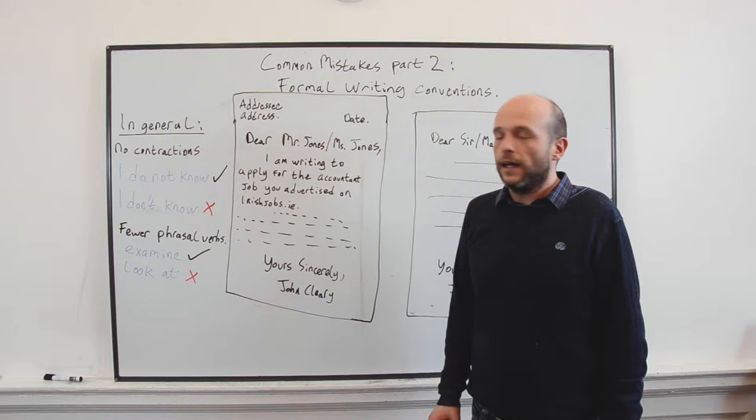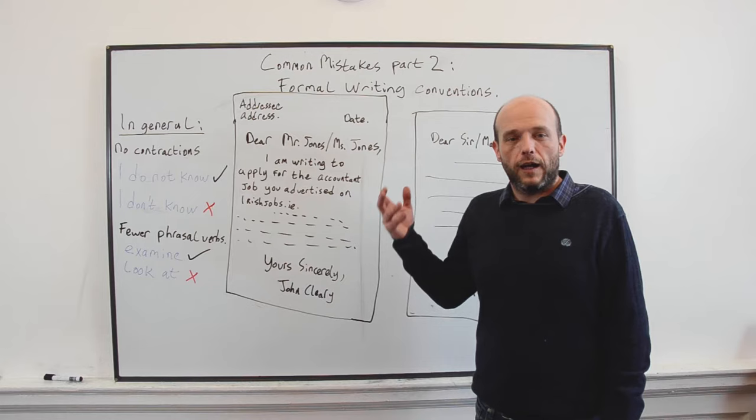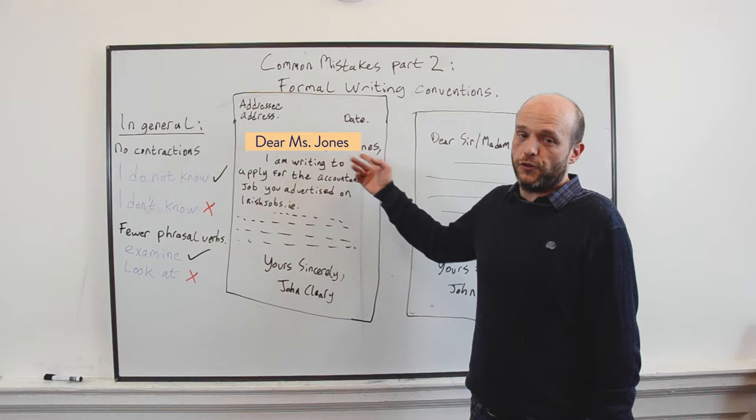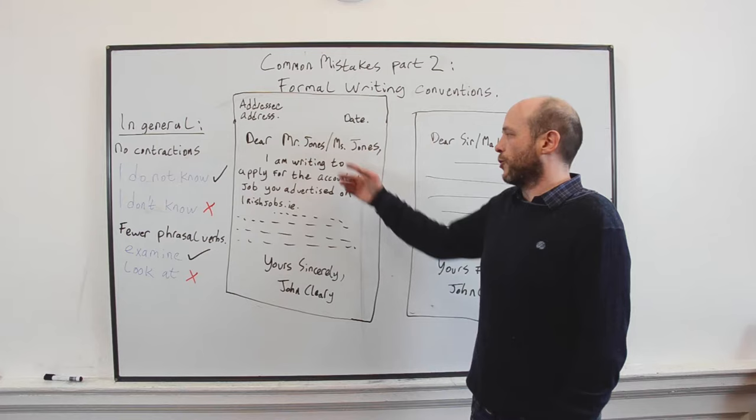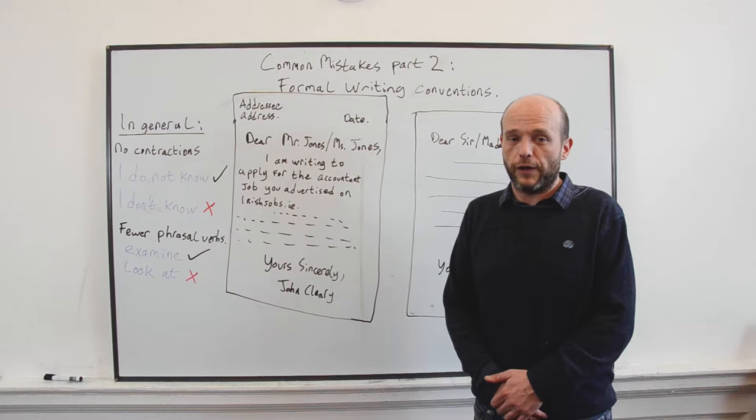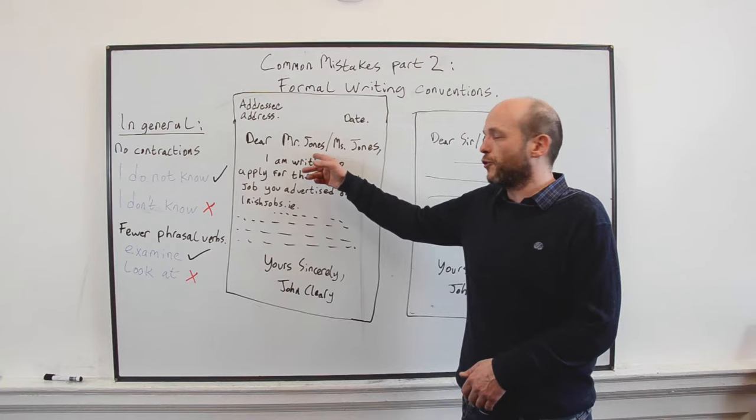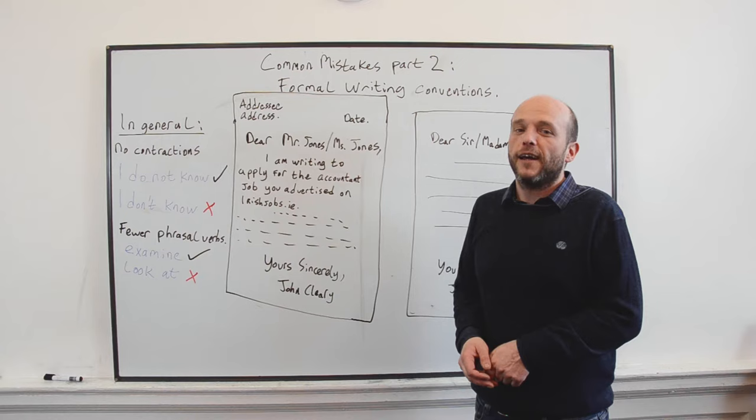It's a formal letter and you do not know this person personally, so we always address them by their appropriate title. If it's a man, dear Mr. Jones. If it's a woman, dear Ms. Jones. We always use Ms. because this is the formal, polite form of address for any woman, whether she is married or unmarried. If you were to write Mrs. Jones, the person on the other end of the letter might be very insulted. So if you say Ms. you cannot go wrong. So dear Mr. Jones or Ms. Jones. Not dear John or dear Mary. This is too informal.